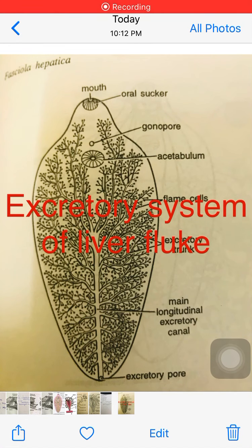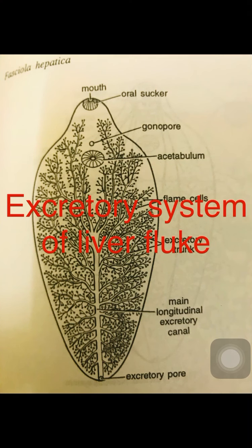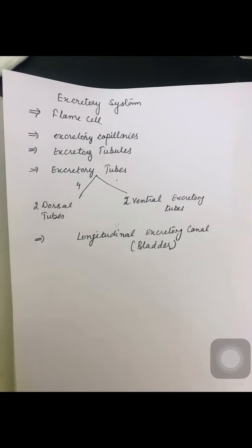We start with the excretory system of liver fluke. Liver fluke is a parasitic organism found in the bile duct of sheep, and its excretory system comprises what is called a flame cell. The excretory organ is a flame cell called proto-nephridium.